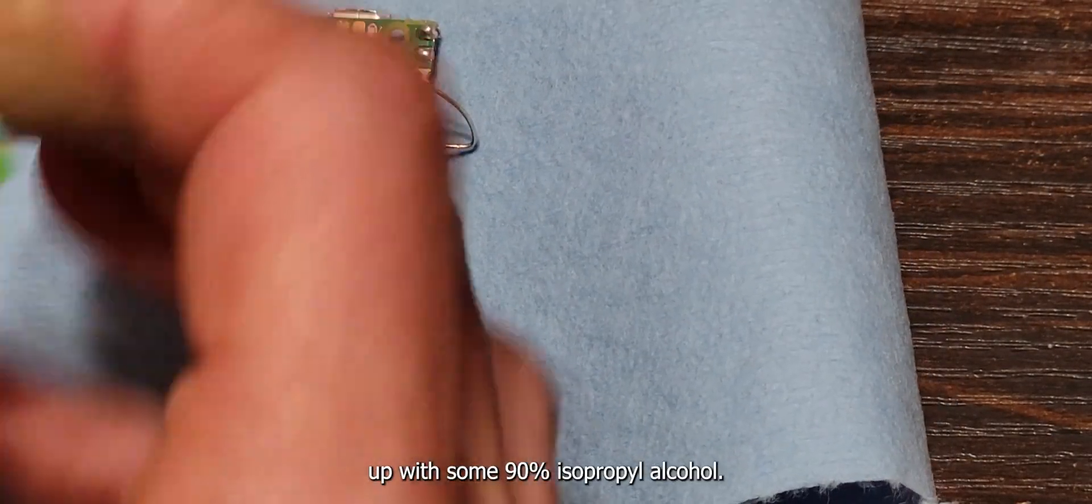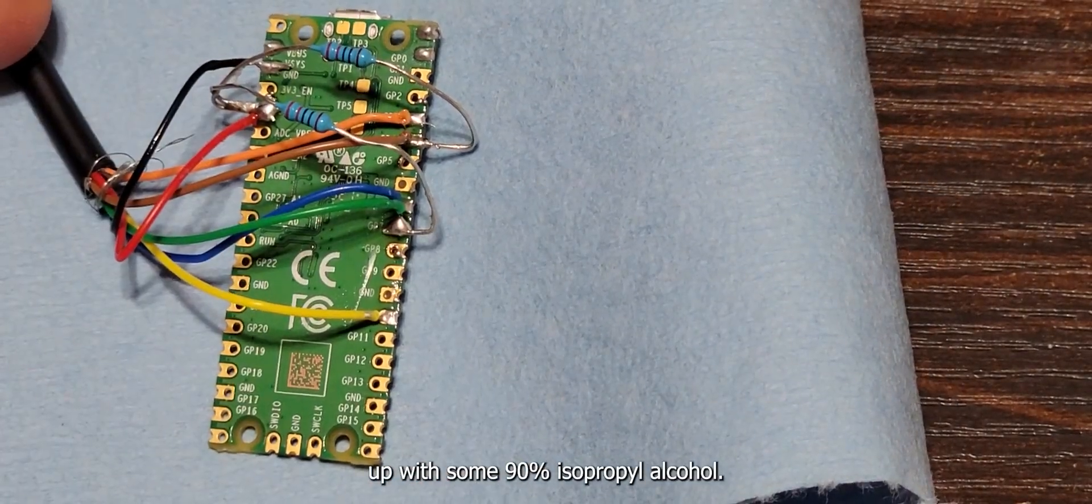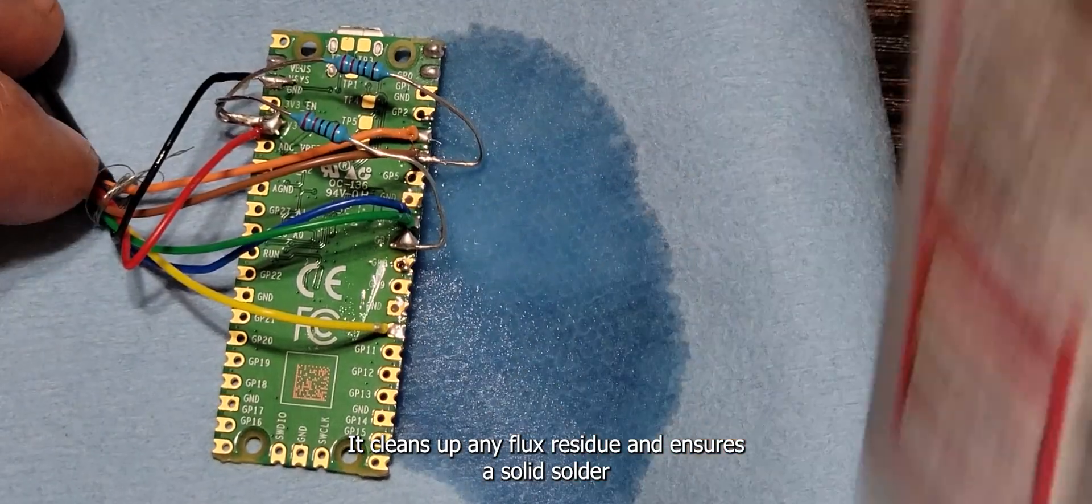Always tidy up with some 90% isopropyl alcohol. It cleans up any flux residue and ensures a solid solder joint.